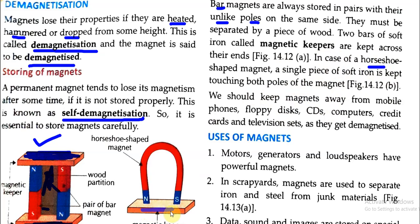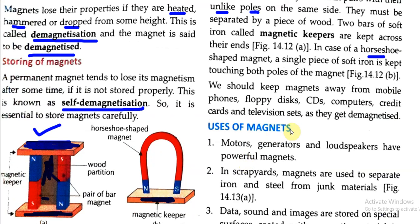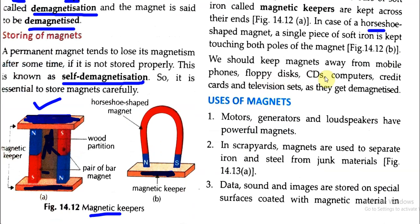To preserve magnetism for a long period, we should keep magnets away from mobile phones, floppy disks, CDs, computers, credit cards, and television sets, as they can cause demagnetization.